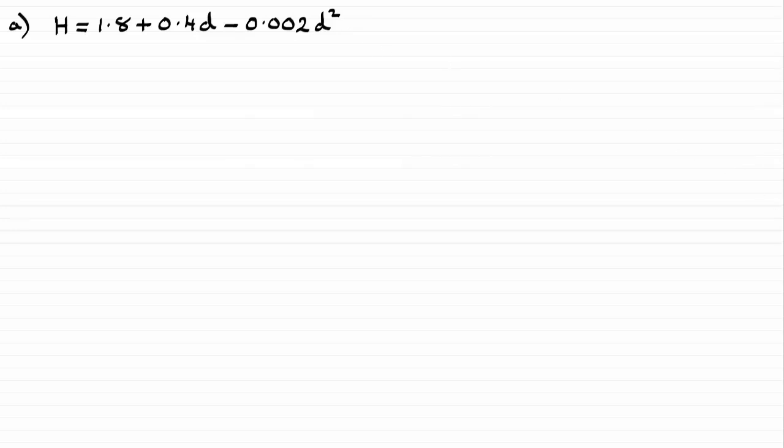It might help to show a diagram of this. I've got one here where the distance d when it equals zero comes out at 1.8, and that represents the height that the arrow was initially fired at.